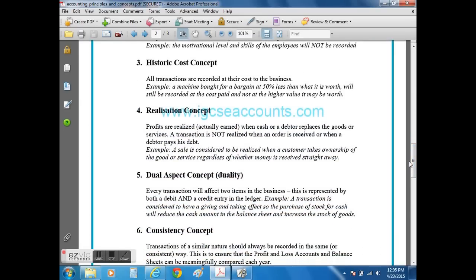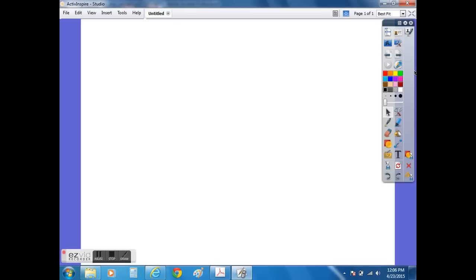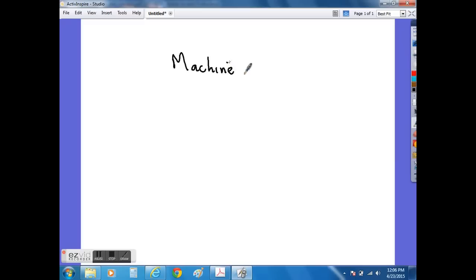The third concept is known as the historic cost concept. This concept or rule basically suggests that if you are to purchase an asset, then if we say, for example, we bought a machine at $50,000, then we would record that asset value as $50,000 in our balance sheet.